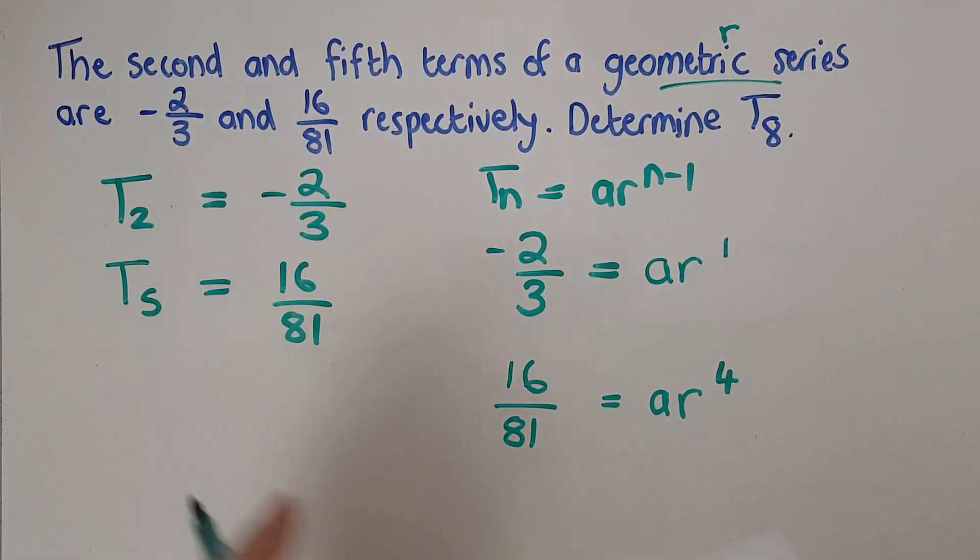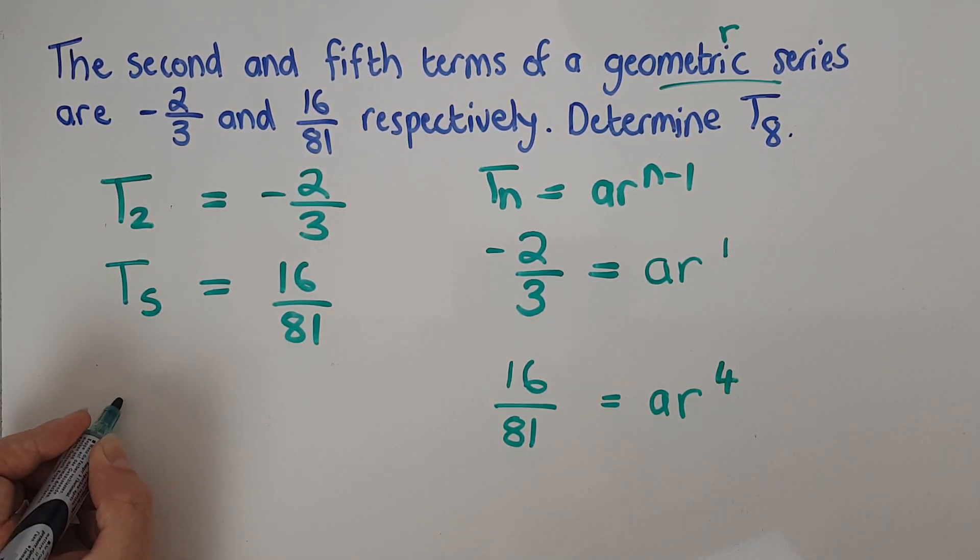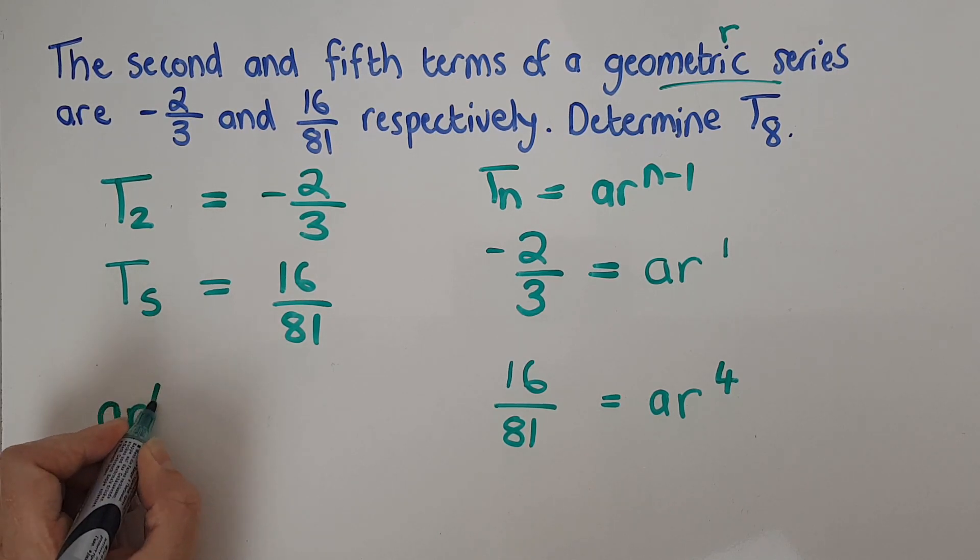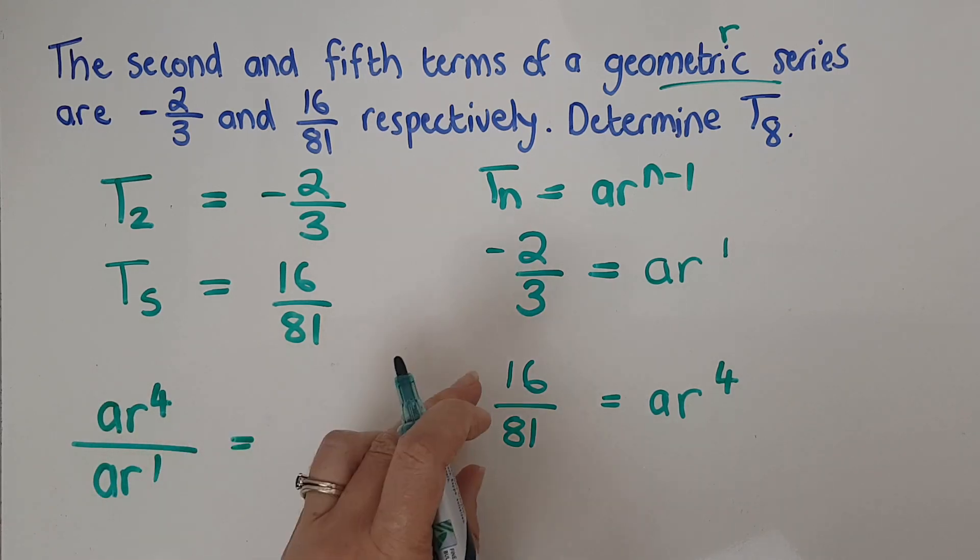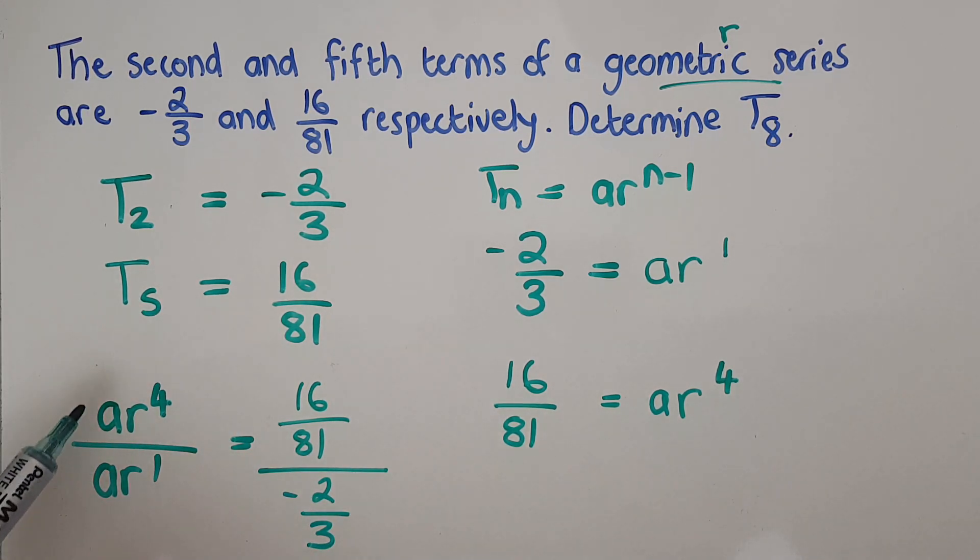So if I have, I'm going to put the bigger one over the smaller one. So if I have AR to the four and I go over AR to the one, then I'm going to have this thing over that thing. So I'm going to have 16 over 81, big fraction line, negative two over three. And then what I can do here is you can see the A's will cancel, which is the whole process of an elimination method. And then I'm going to be left with R to the three on the left hand side.